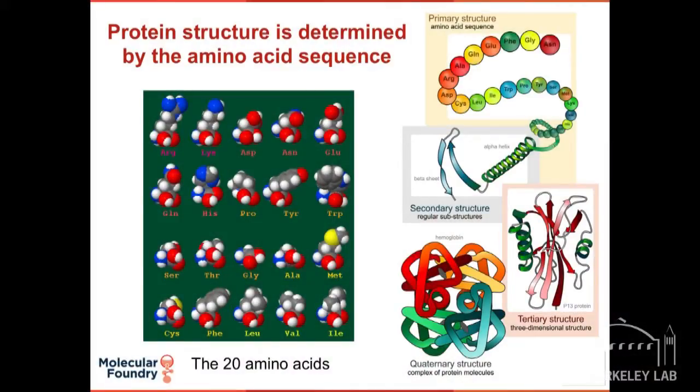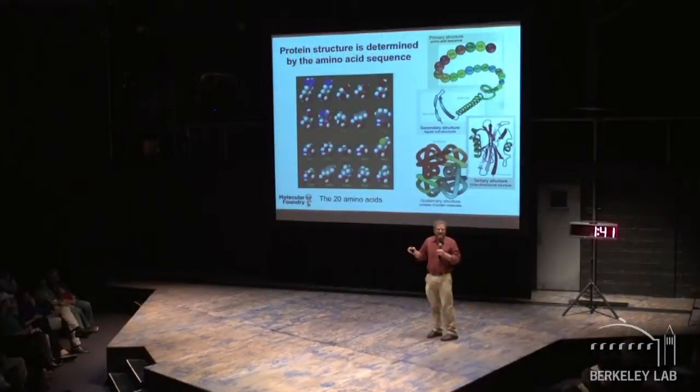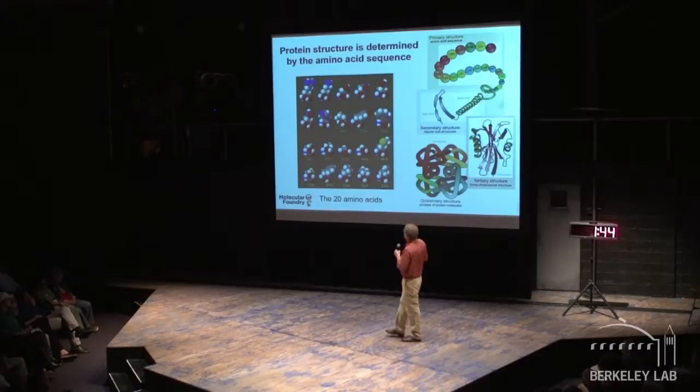So why does nature use that type of architecture? The answer is pretty simple: it's about a simple set of building blocks. It's very efficient to build things from a common set of building blocks. Here I'm showing the 20 amino acids that represent all the building blocks you need to make any protein in our body. Nature does this by stringing them together in a particular sequence — the actual order of monomers in the chain determines a protein's shape and its function.